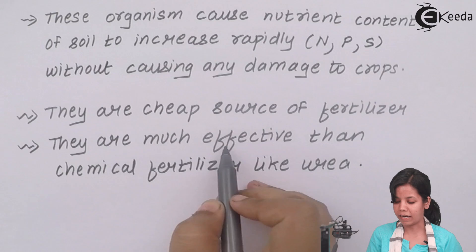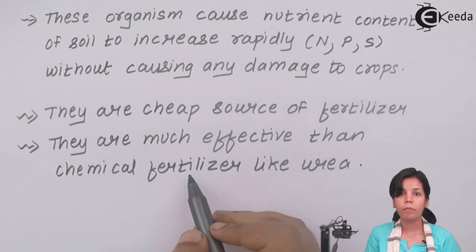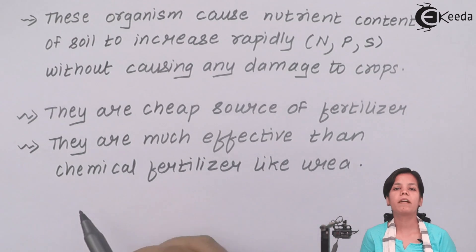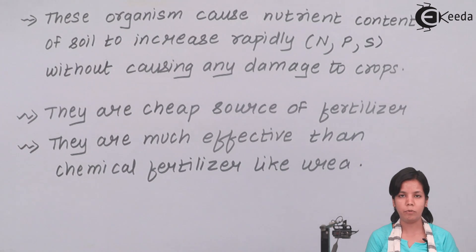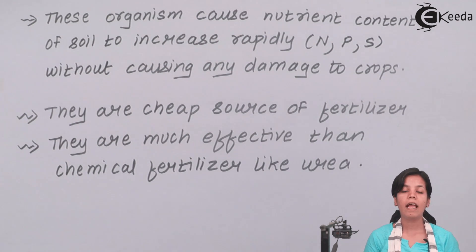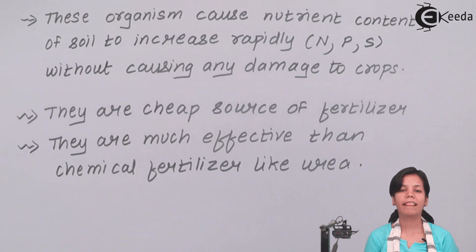Biofertilizers are much more effective than chemical fertilizers like urea, which cause a lot of damage to the crop, cause pollution, and are expensive. In this part of the chapter, we have studied how biofertilizers have helped humankind and the great aspects of biofertilizers compared to chemical fertilizers. I hope you all have understood clearly about this topic. Thank you.